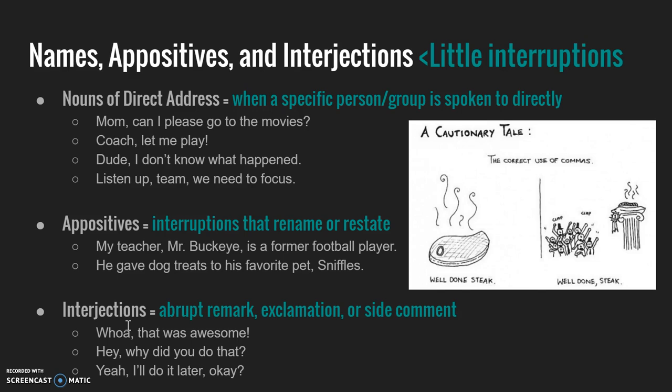Interjections are another type of brief pause that get a comma. Interjections are actually one of the nine parts of speech — they are abrupt remarks, exclamations, or side comments. Just like a noun of direct address had a little word and then a comma, interjections are also a little word with a comma, except these are not names. For example: 'Whoa! That was awesome!' 'Hey! Why did you do that?' 'Yeah, I'll do it later. Okay?' In that final sentence, both 'yeah' and 'okay' are interjections — single words or a couple of words that are exclaiming or making a side comment.